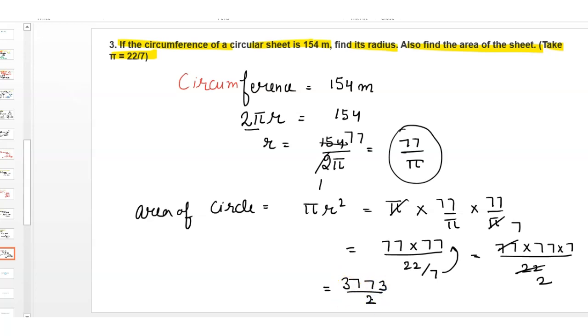When it is divided by 2, it is 1886.5 meters squared. So this is the area of the sheet, 1886.5 meters squared. Thank you.